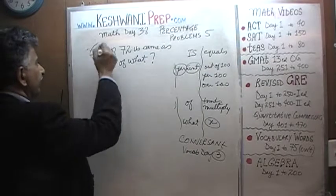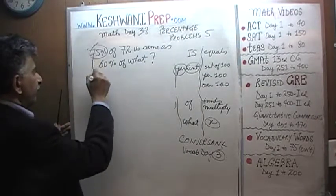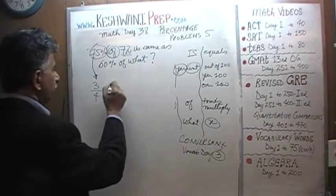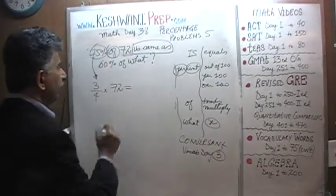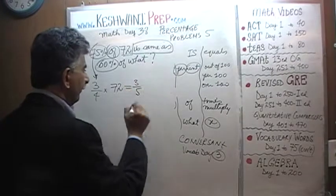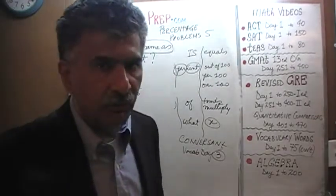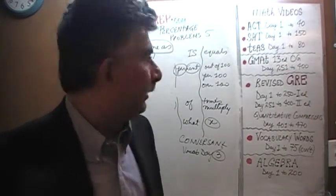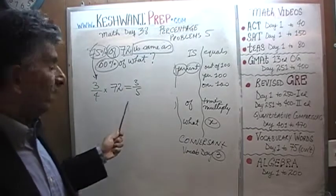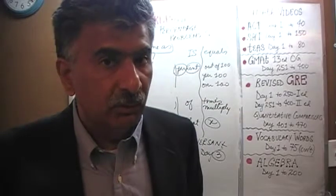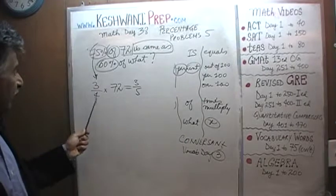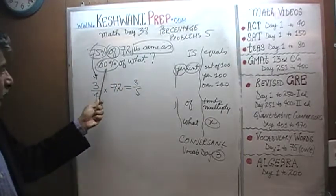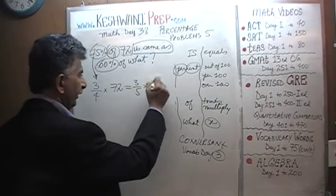75% is the same as 3 quarters. 'Of' means times. So 3 quarters times 72, 'is same as' is your equal sign, and 60% — which is 3 fifths — 'of' means times X. So the equation is: (3/4) × 72 = (3/5) × X.